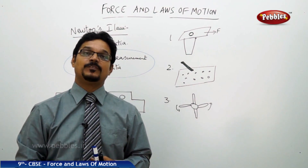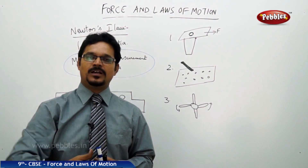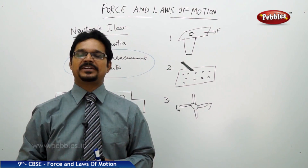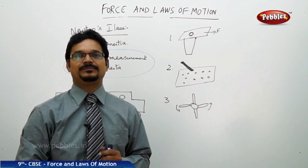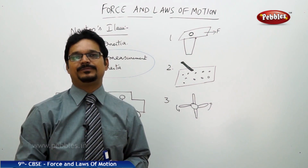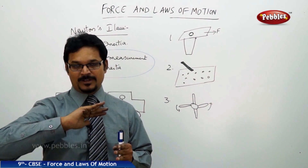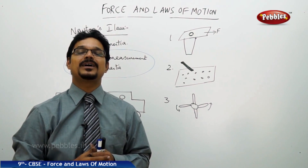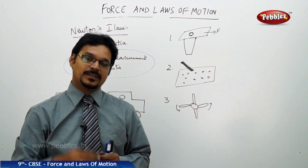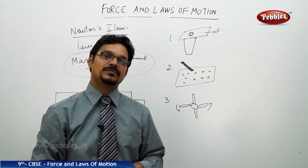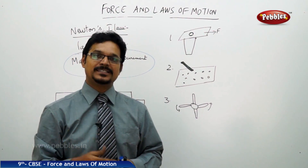Suppose a car is moving at very high speed and the driver sees something 100 meters ahead and applies the brakes. Because of inertia, the car wants to remain in motion, so it still moves and only stops after some time. The stopping distance depends on the mass — a car has more mass, so it takes longer to stop. But in the same scenario with a cycle, applying the brakes stops it almost immediately because of its lesser mass and lesser inertia.